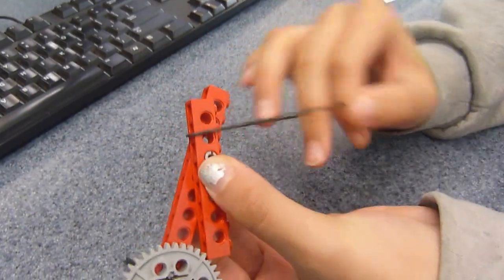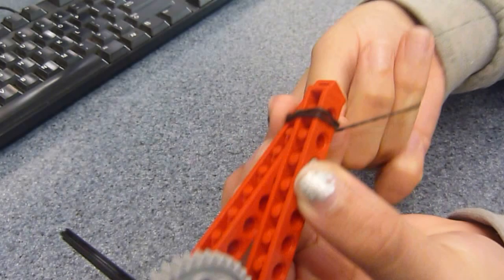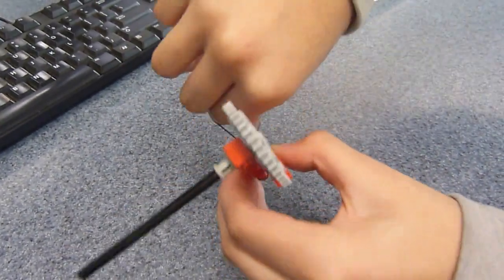Then you wrap the elastic band at the front, where the two first meet. Make sure to wrap it tight.